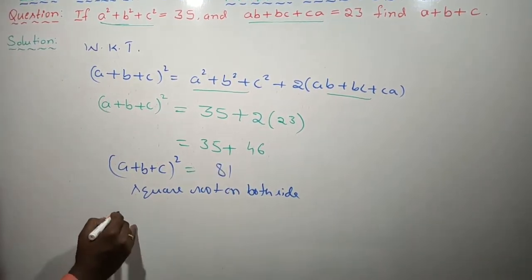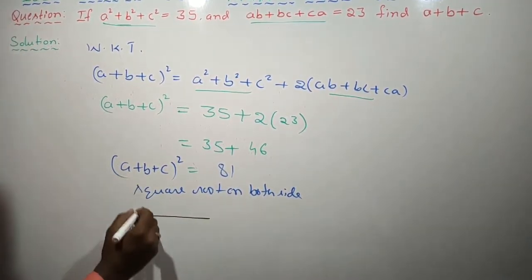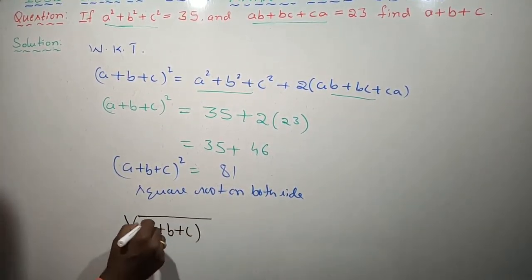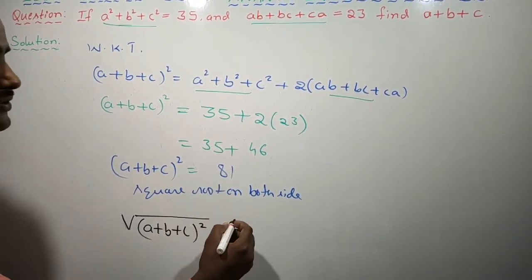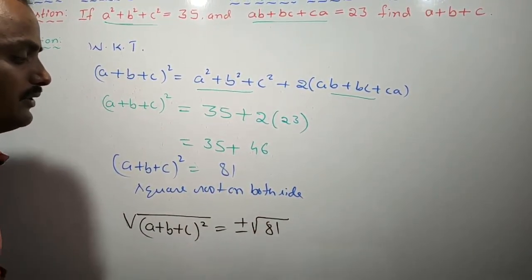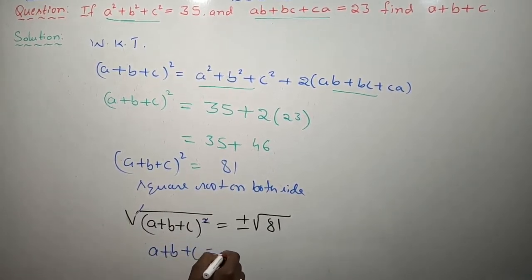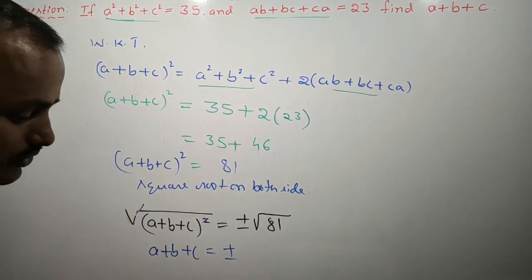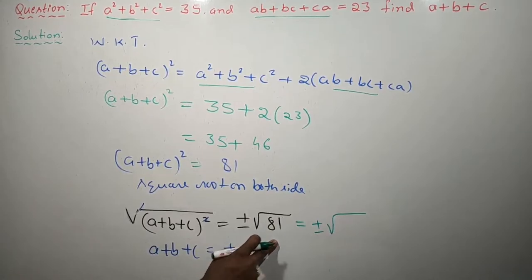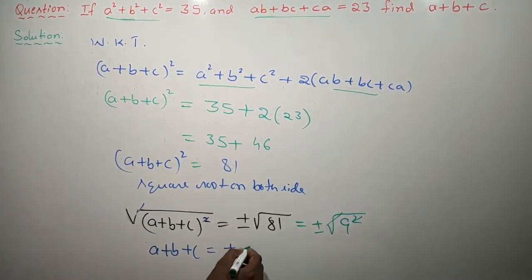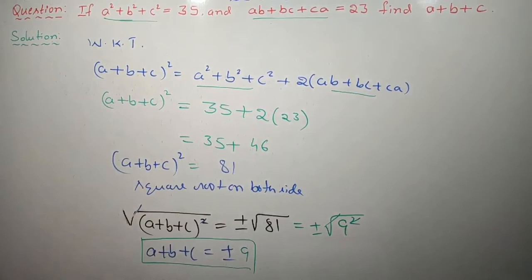Now, applying square root on both sides: the square root of a plus b plus c whole squared — the square and square root cancel. On the right-hand side, since it is a constant, we use plus or minus: square root of 81. The square root of 81 is 9, because 81 is a perfect square — 9 squared. Finally, a plus b plus c is equal to plus or minus 9, children.